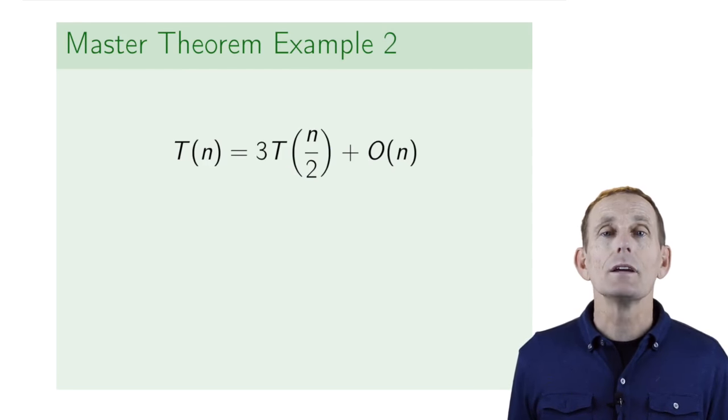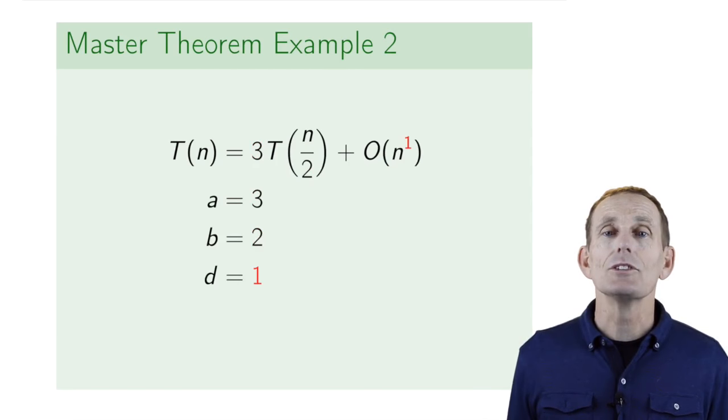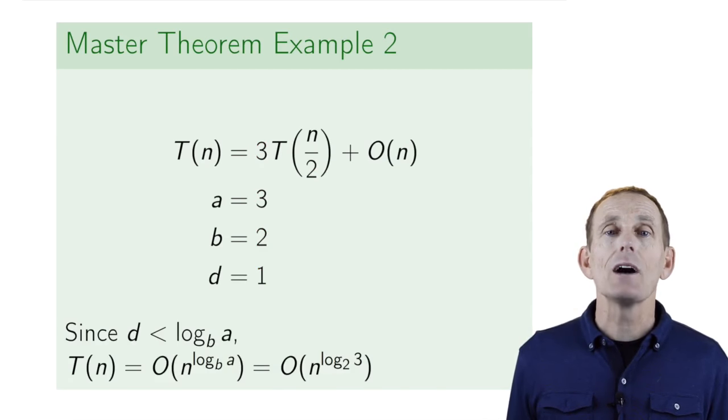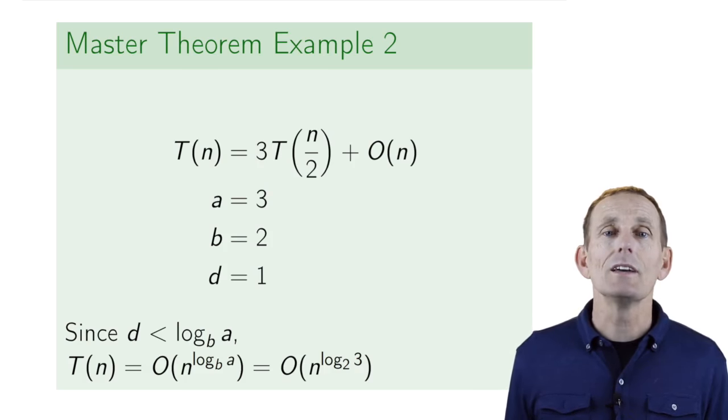If now we change the 4 to a 3, a is 3, b is 2, d is 1. Now d is still less than log base b of a, because log base 2 of 3 is greater than 1. And so, again, we're in case 3. T(n) equals big O of n to the log base b of a, which equals big O of n to the log base 2 of 3.